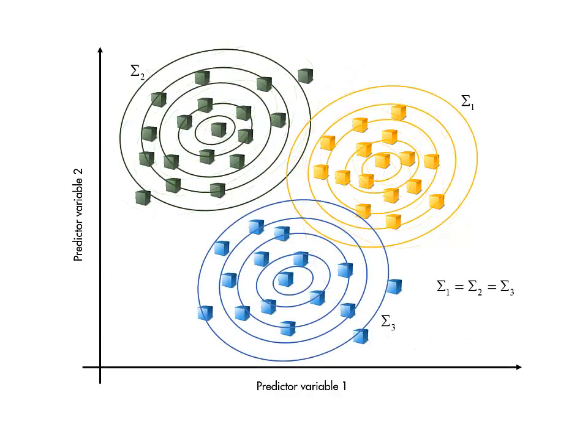If we assume that the distributions all have the same shape, that is, the same covariance matrices, then the formula simplifies greatly. The boundaries turn out to be linear, and the coefficients of these linear boundaries are easily calculated from the individual class means and shared covariance matrix of the observations. This makes linear discriminant analysis quick and easy to perform.